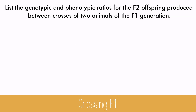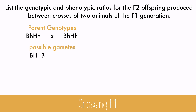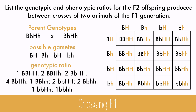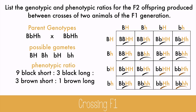Now using the same rabbits, we'll list the genotypic and phenotypic ratios for the F2 offspring produced between crosses of two animals in the F1 generation. Across the top and the side are the four possible gamete combinations: big B big H, big B little h, little b big H, and little little. Then you fill in the Punnett square. The genotypic ratio is a big one. It's not nearly as useful as the phenotypic ratio though. There are nine boxes that are short black hair, three that are long black hair, three that are short brown hair, and one that is long brown hair. That's the 9 to 3 to 3 to 1 ratio that we saw before.